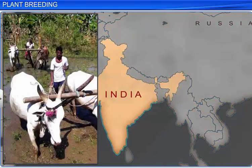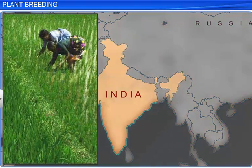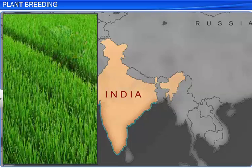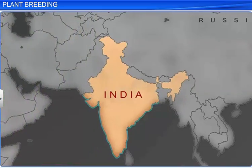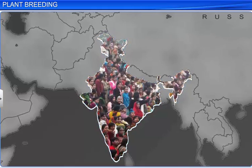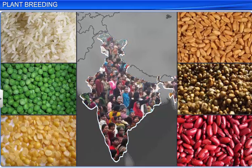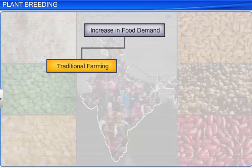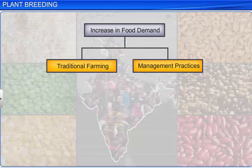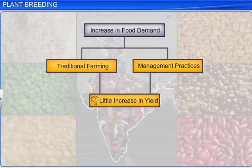India is an agricultural country with 62% of people engaged in agriculture for their livelihood. With the passage of time and an increase in population, the demand for food has risen extensively. Earlier, this was tackled through traditional farming and better management practices. However, it resulted in a very small increase in yield.